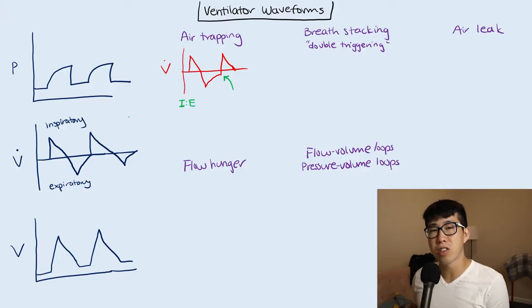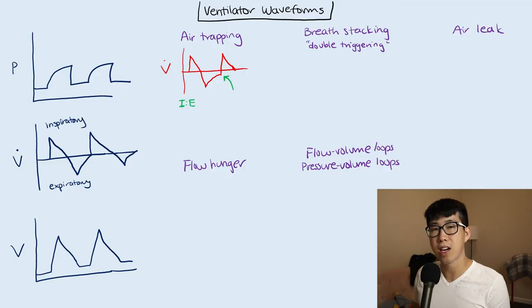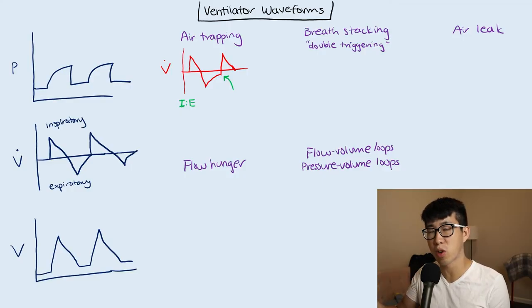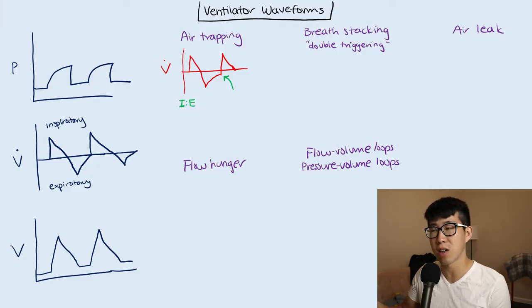What you want to do is decrease the inspiratory time and increase the expiratory time. In addition, you can also use things like bronchodilators, which can help with severe obstructive lung disease. And you can also increase the flow to push air more quickly in the patient, which will decrease the I time and help to alleviate some of the air obstruction.